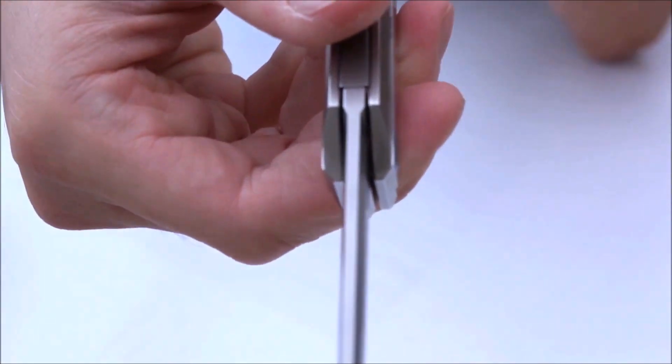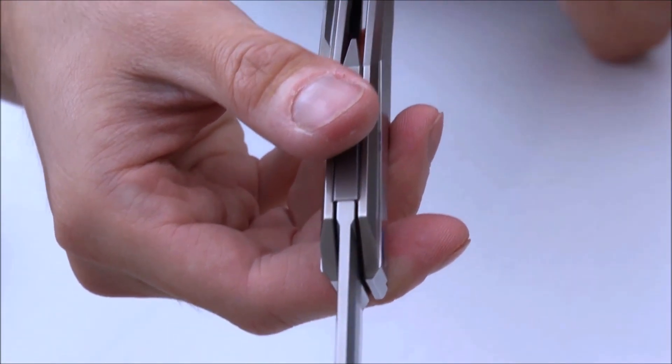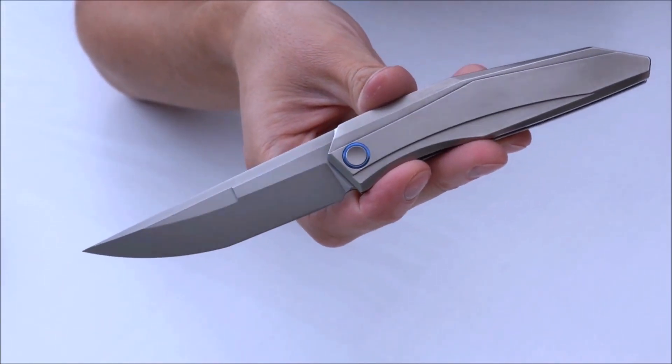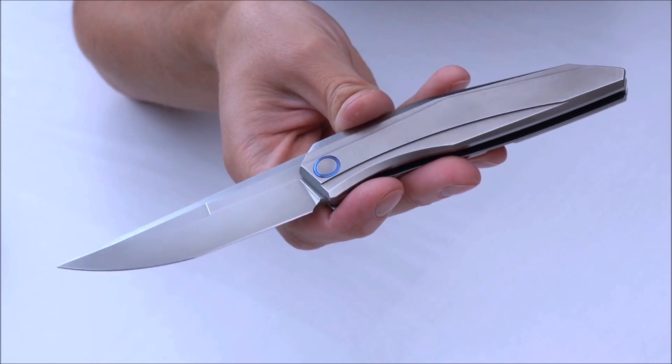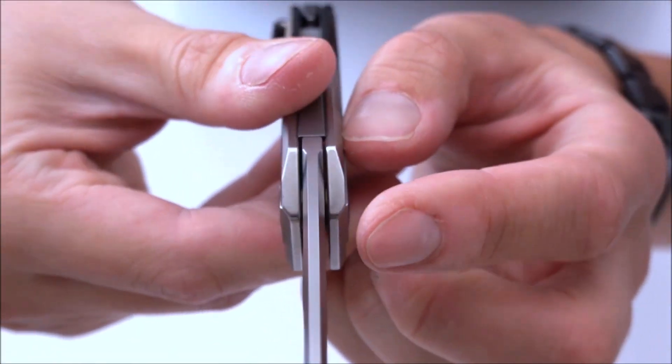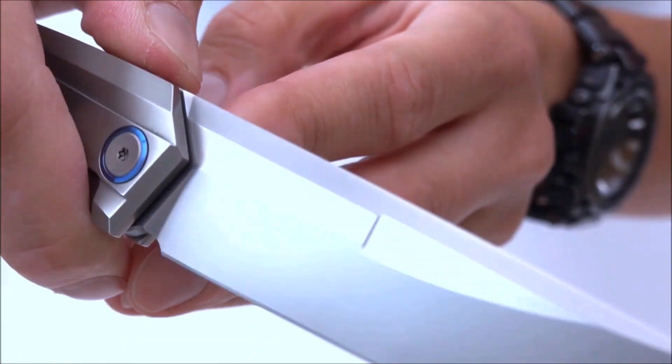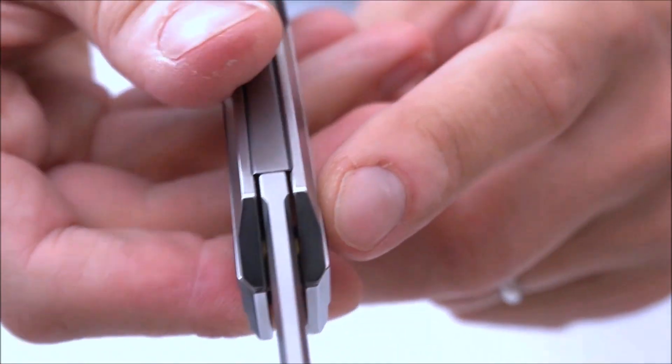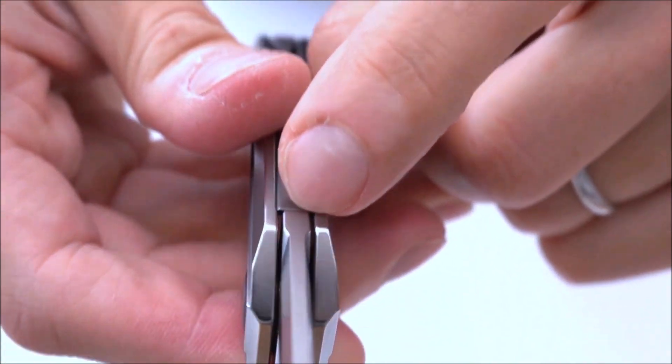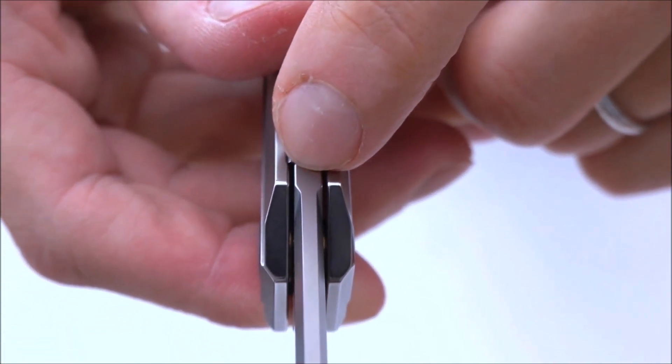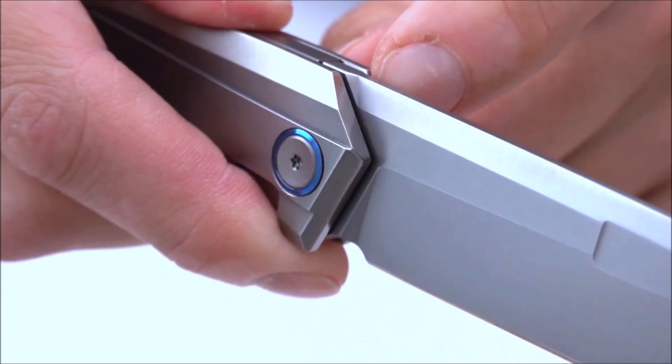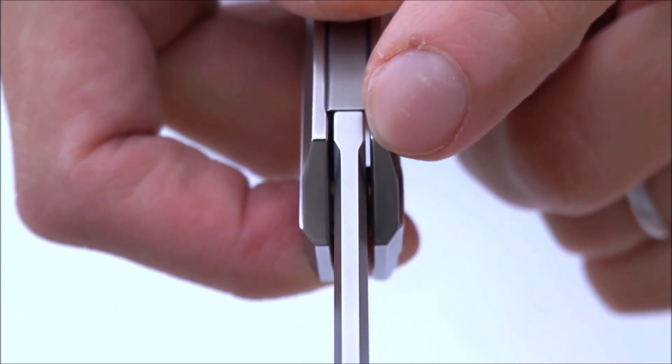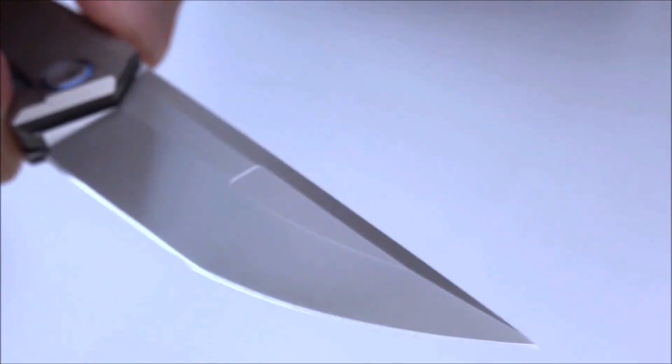We've got a blade thickness of 4 millimeters. And I'm glad they went with 4 millimeters instead of their usual, or not usual, but we have seen 3.2 millimeters on a lot of Weknife releases recently. And I think that 4 millimeters is quite nice. It will be difficult seeing the actual full 4 millimeters here because we have this swedge grind that starts all the way back. So if you want to see the full thickness, here is where you need to look because the swedge grind starts right away.